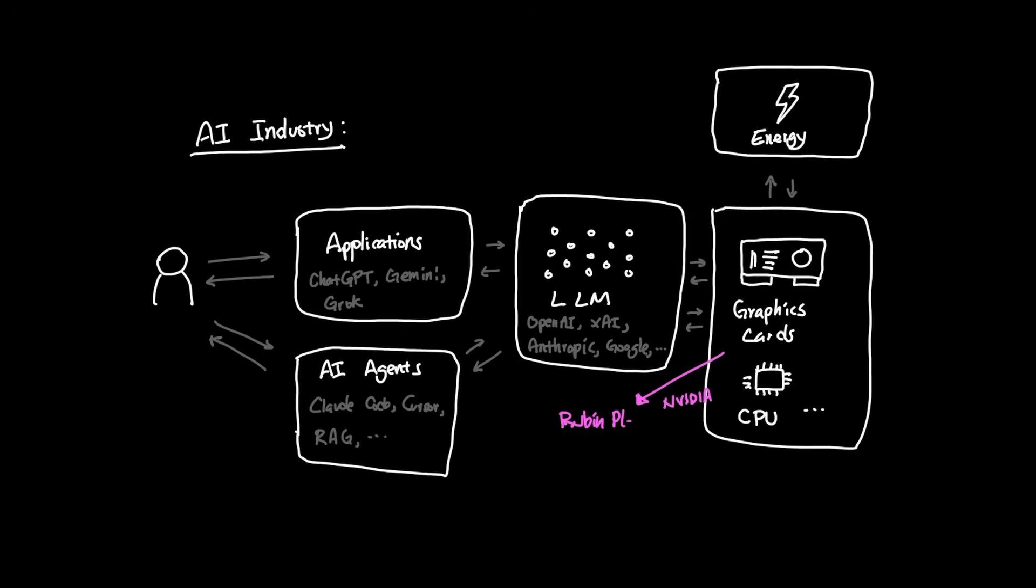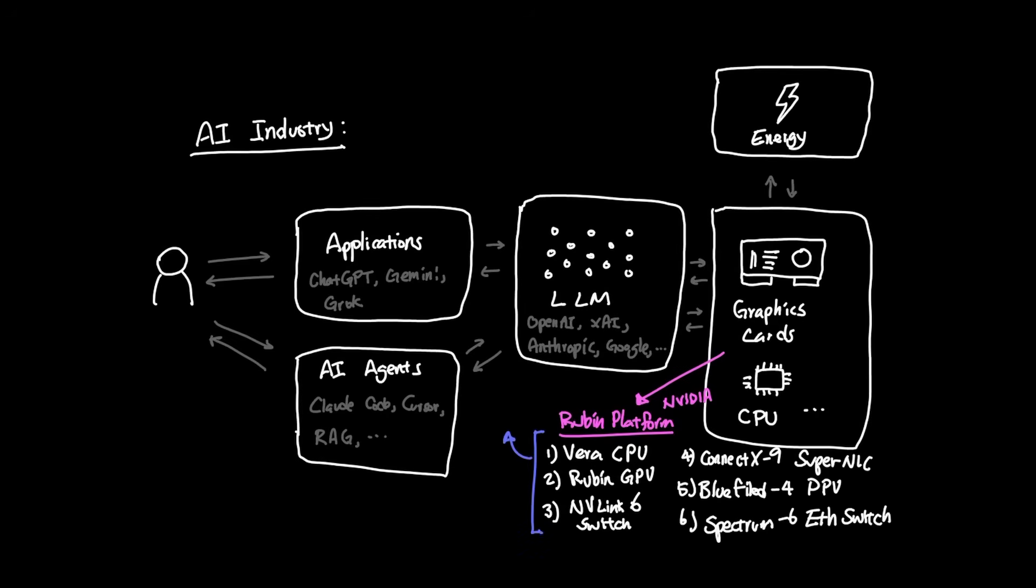So when we look at NVIDIA's release of their Vera CPU, Rubin GPU, NVLink 6 Switch, ConnectX9 SuperNIC, Bluefield 4 DPU, Spectrum 6 Ethernet Switch, all seem to point to 2026 being the year of agents and robots.